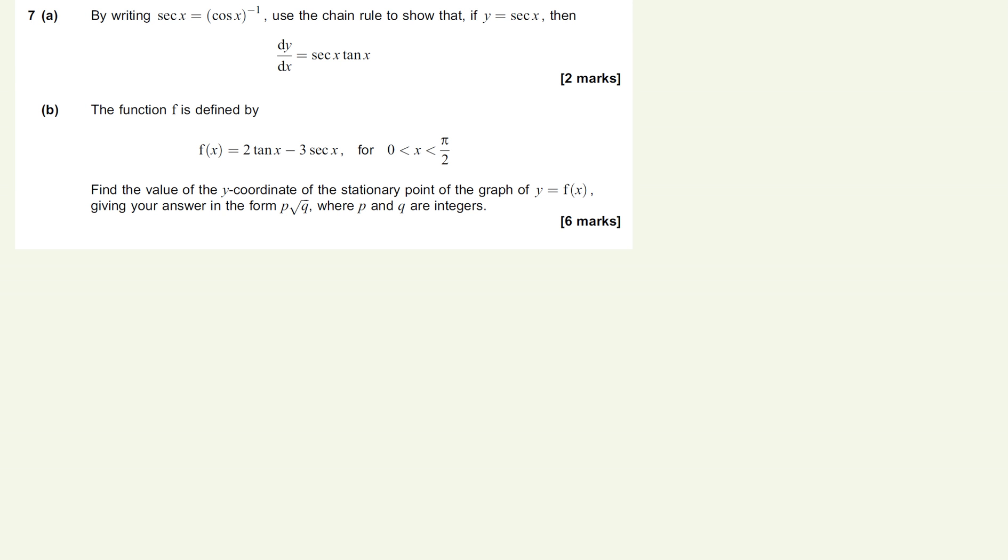Okay, question 7 then starts off. So it's the first of the two trig questions on the paper. So it starts off by asking us to use the chain rule to show that if we write y equals sec x as y equals cos to the minus 1, we will be able to show that it comes to that term there. So that's what we're going to work on.